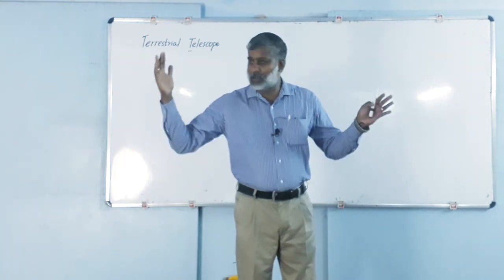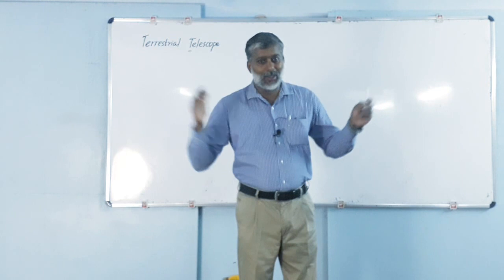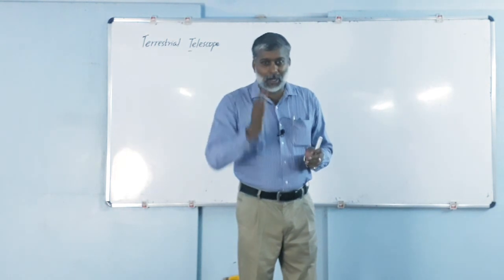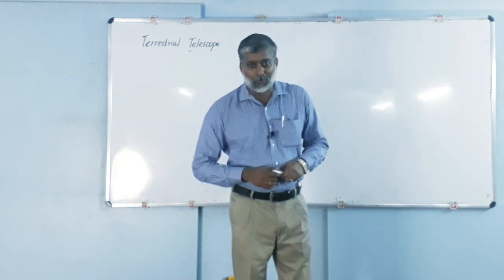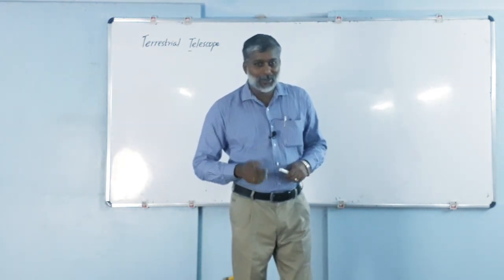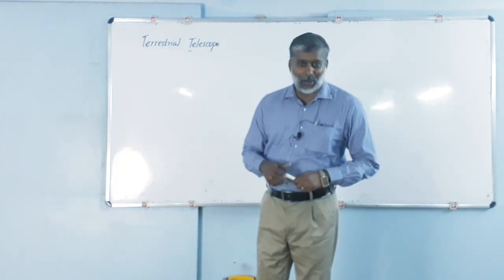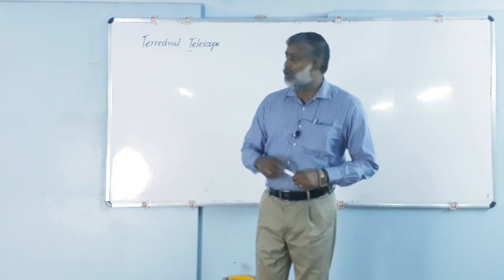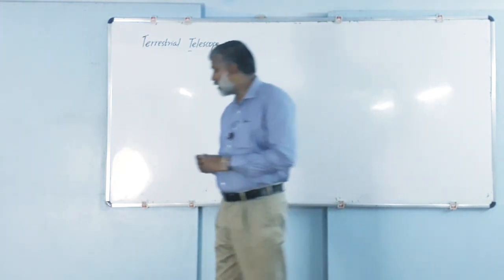In between the objective lens and eyepiece lens there will be a third convex lens. What is its name? It is called the erecting lens. So let me tell you about the ray diagram for it.